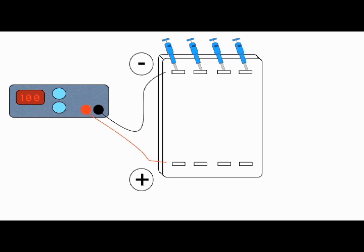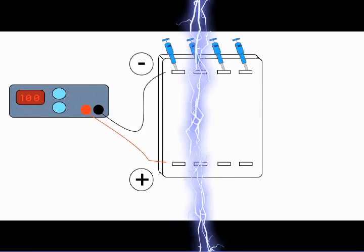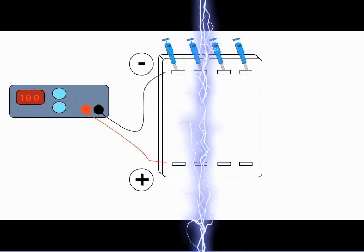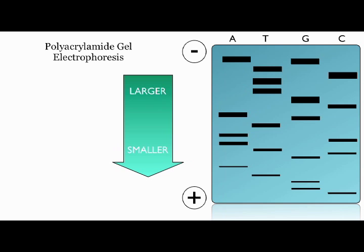Polyacrylamide gel electrophoresis can separate polynucleotide chains differing in size by one nucleotide. A current is set up across the gel and the DNA is inserted at the end with the negative electrode. As the DNA is negatively charged, it will begin to migrate towards the positive electrode. Smaller fragments will move faster than larger fragments.